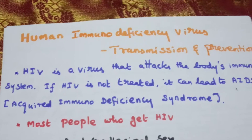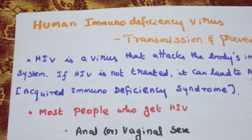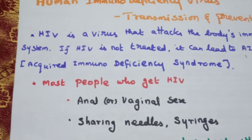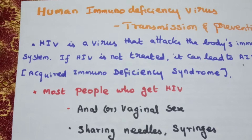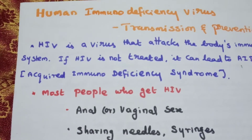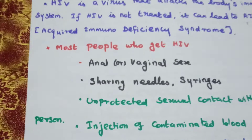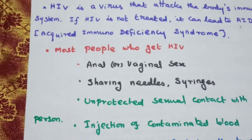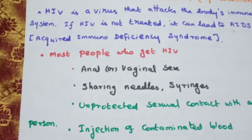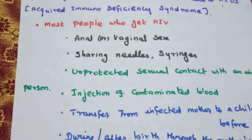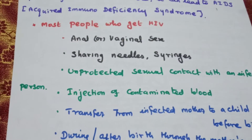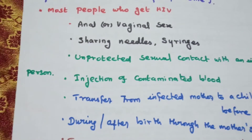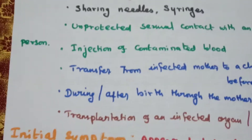How do people get HIV? Through sex — that is the major way. Then, sharing syringes and needles. Third, unprotected sexual contact with an infected person. Fourth, injection of contaminated blood. Fifth, transfer from an infected mother to child before birth, after and during birth, and through mother's milk. And transplantation of an infected organ or tissue.